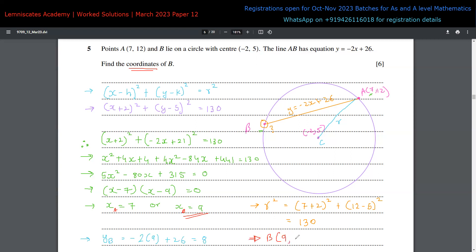The final coordinates of B are (9, 8). X is 9, Y is 8. We've cross-checked everything and we're done with the fifth question of this paper.